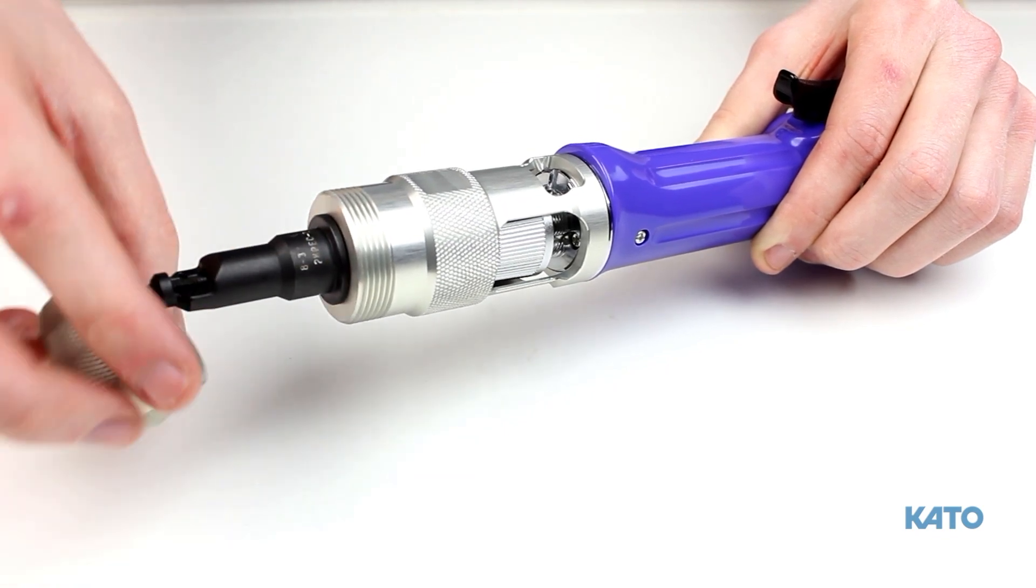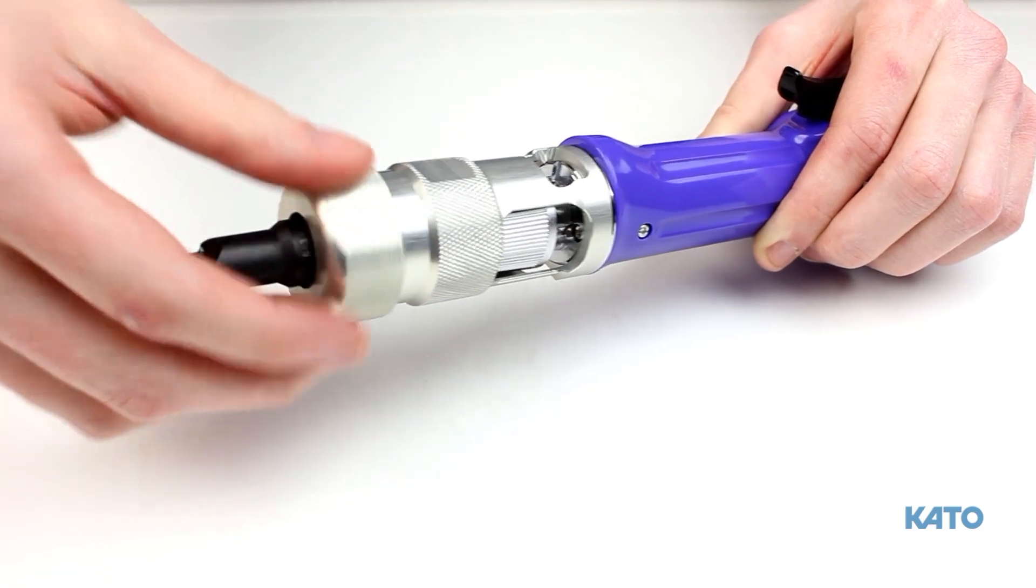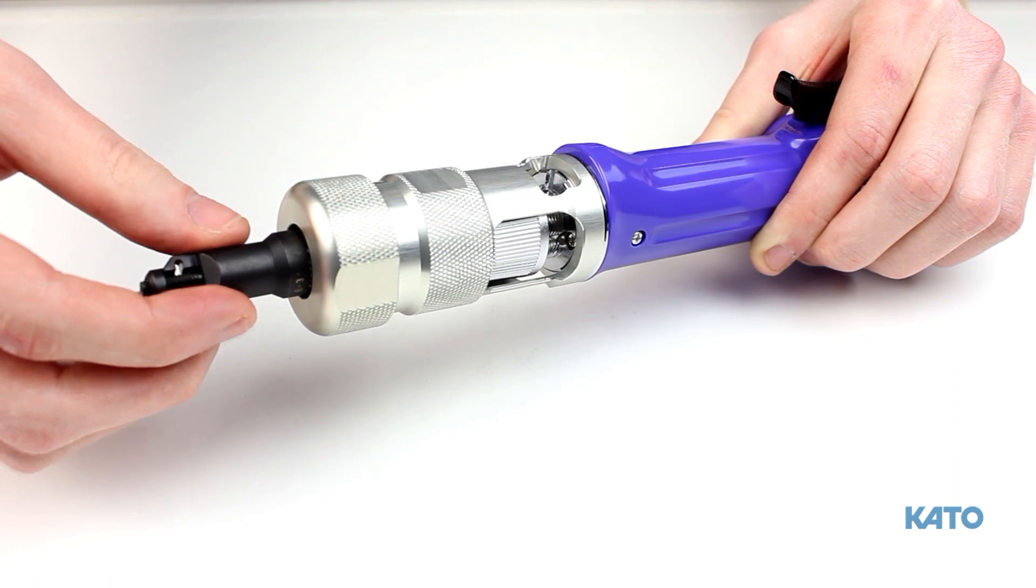Place the lock nut over the front-end assembly and tighten by turning counterclockwise. Before fully tightening the lock nut, rotate the front-end assembly so that it is positioned for operator comfort and preference.